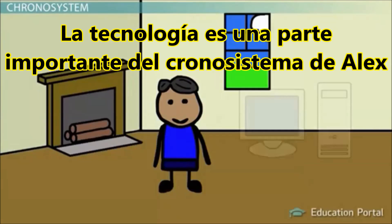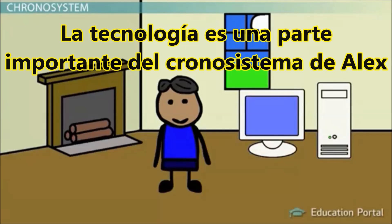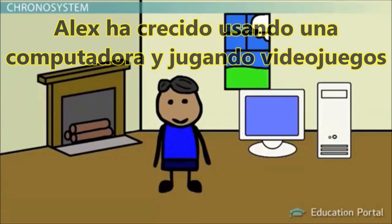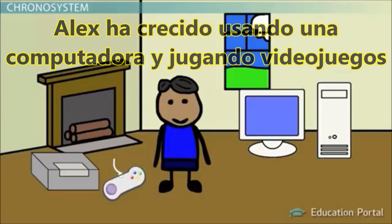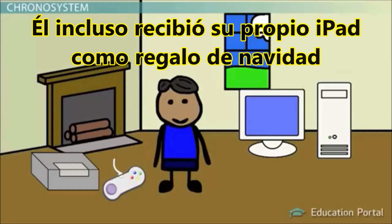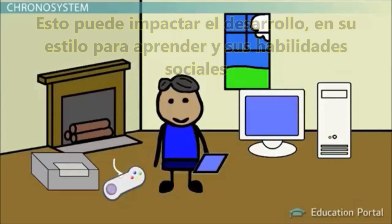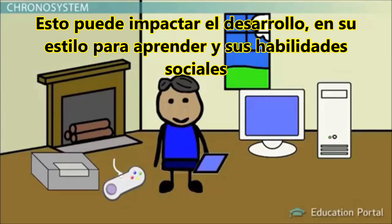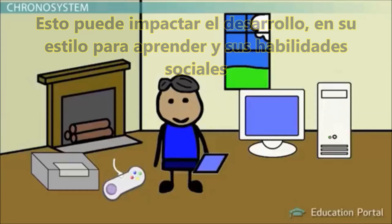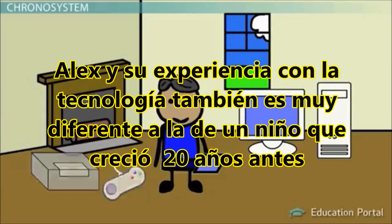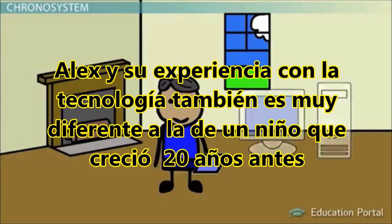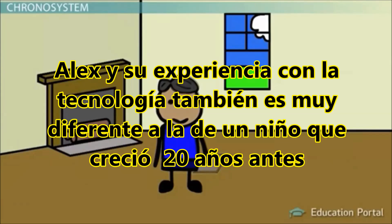Technology is one important part of Alex's Chronosystem. Alex has grown up using a computer and playing video games, and even received his own iPad as a Christmas present. This could have a developmental impact on his learning style and social skills. Alex's experience with technology is also very different from that of a child growing up 20 years earlier.